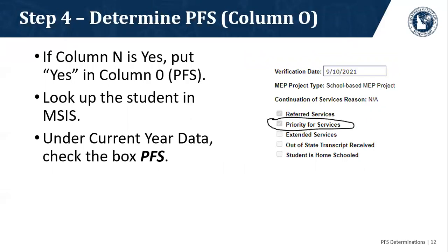Now you're determining if the student is eligible for priority for services. This information goes into column O. If column N — the academic risk — is yes, you will also put yes in column O. We've already determined that any student on the list meets the first criteria, which is a QAD in the last year. When adding new students later in the year, all of those students should have a QAD in the last year as they're newly identified as migrant. After making your determination, look up the student in MSIS, go to the current year data, and check the box 'Priority for Services.'